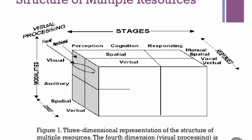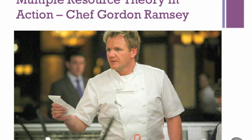Here's a great example of Multiple Resource Theory in action: Chef Gordon Ramsay. He's a TV chef who owns a three-star restaurant in London and highly acclaimed restaurants all over the world. He's a master at coordinating simultaneous demands.